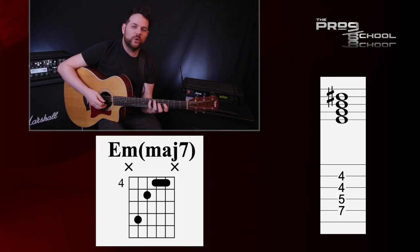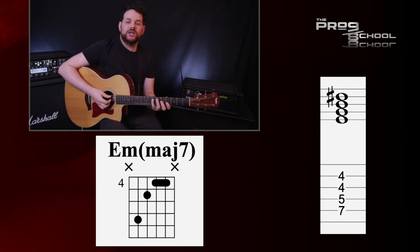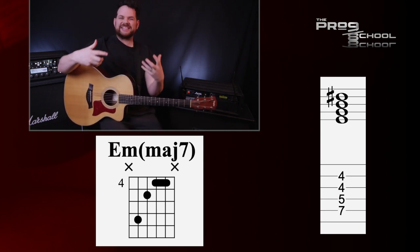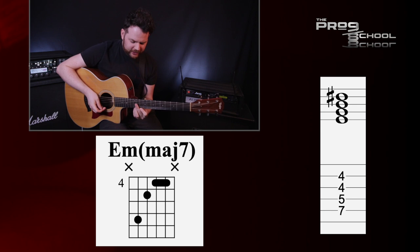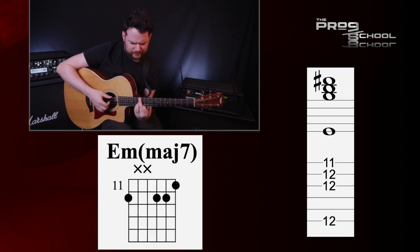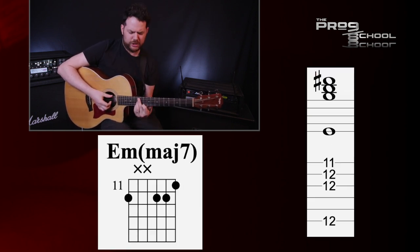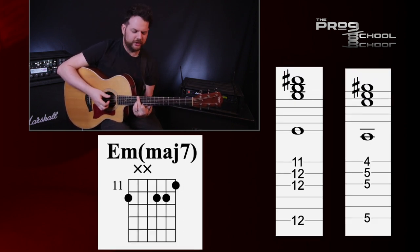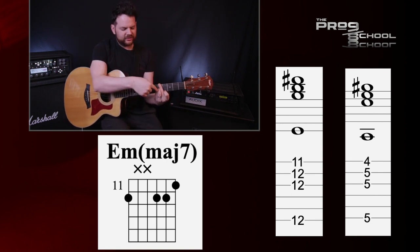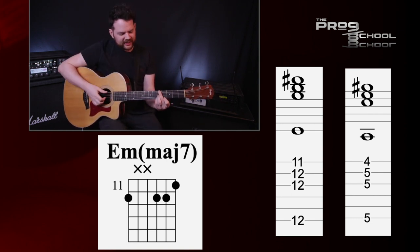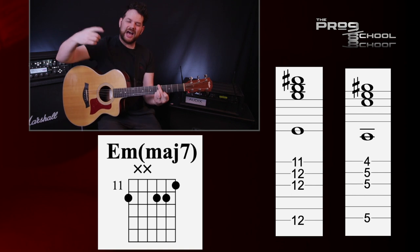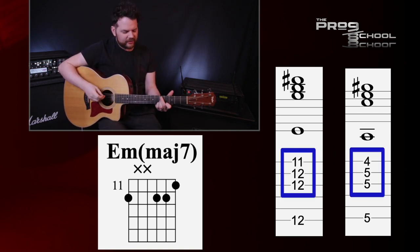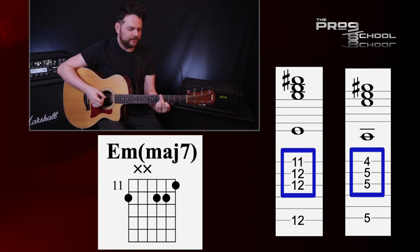This voicing has all of the notes of the chord in order: one, flat three, five, seven — E, G, B, D sharp. A very efficient voicing for showcasing the sound of this chord. One last voicing — I'm actually going to do this in a different key because it's kind of hard up here on the guitar — this is an A minor major seventh, and it showcases the top of the chord: flat three, five, seven. That part of the chord is an augmented triad.